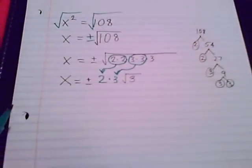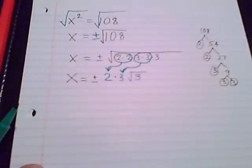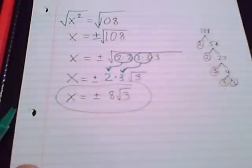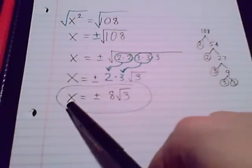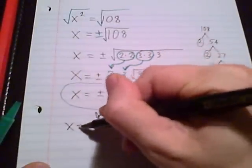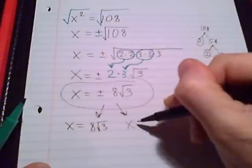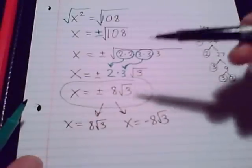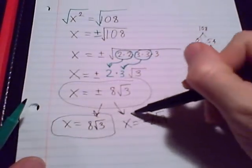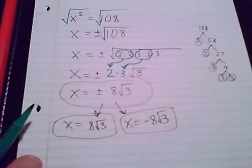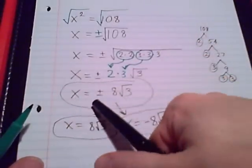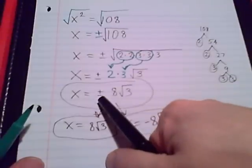Bringing it all down to see the full equation: x equals positive or negative 8 radical 3. The plus or minus symbol is an abbreviation meaning x equals positive 8 radical 3 or x equals negative 8 radical 3. That's a fine place to end it because x is isolated. Those are our two solutions: positive 8 radical 3 or negative 8 radical 3.